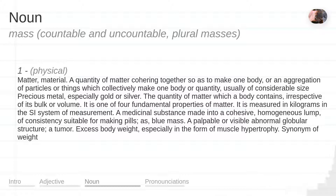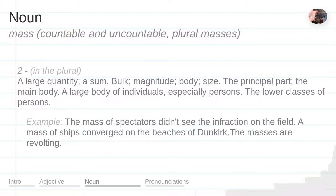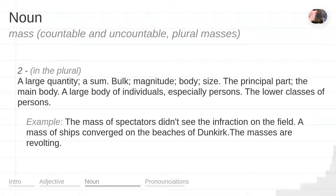A palpable or visible abnormal globular structure. A tumor. Excess body weight, especially in the form of muscle hypertrophy. Synonym of weight. A large quantity. A sum. Bulk. Magnitude. Body.